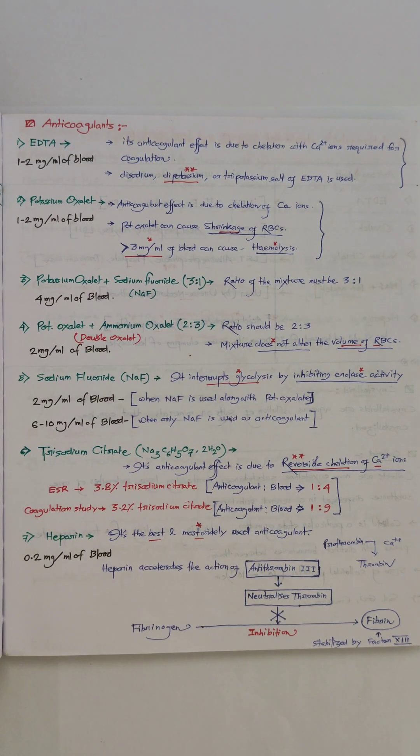The mode of action: heparin accelerates the action of antithrombin 3, and the function of antithrombin 3 is to neutralize thrombin. As it neutralizes thrombin, the conversion of fibrinogen to fibrin is inhibited.